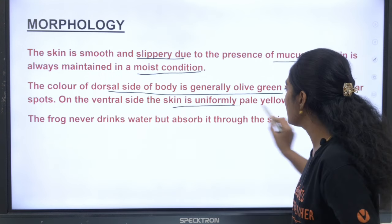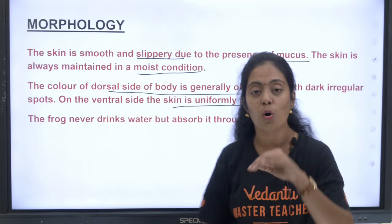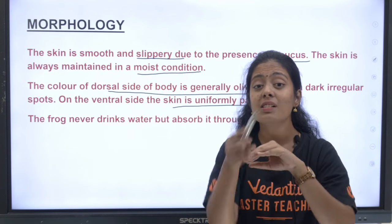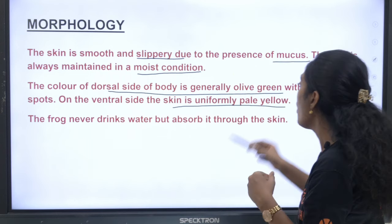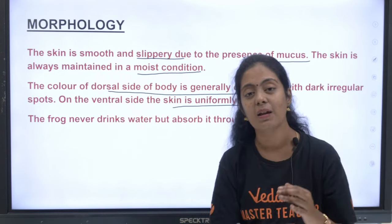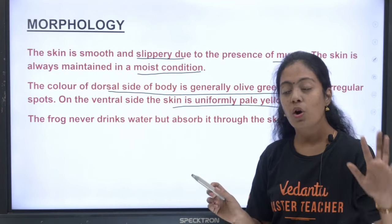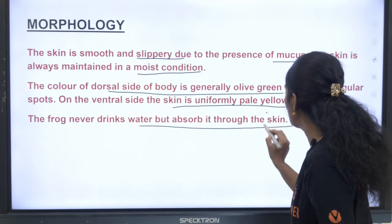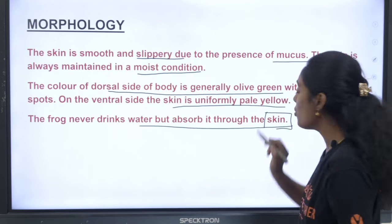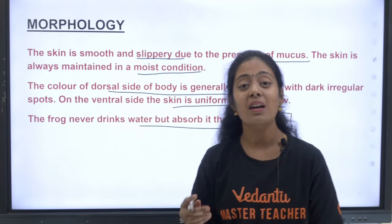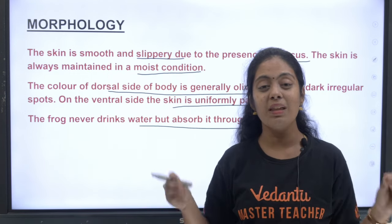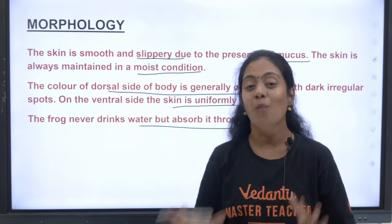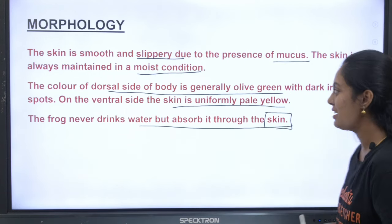On the ventral side, the skin is uniformly pale yellow. The frog never drinks water but absorbs it through the skin. They get water through their skin because the skin is always moist — this is something very interesting.